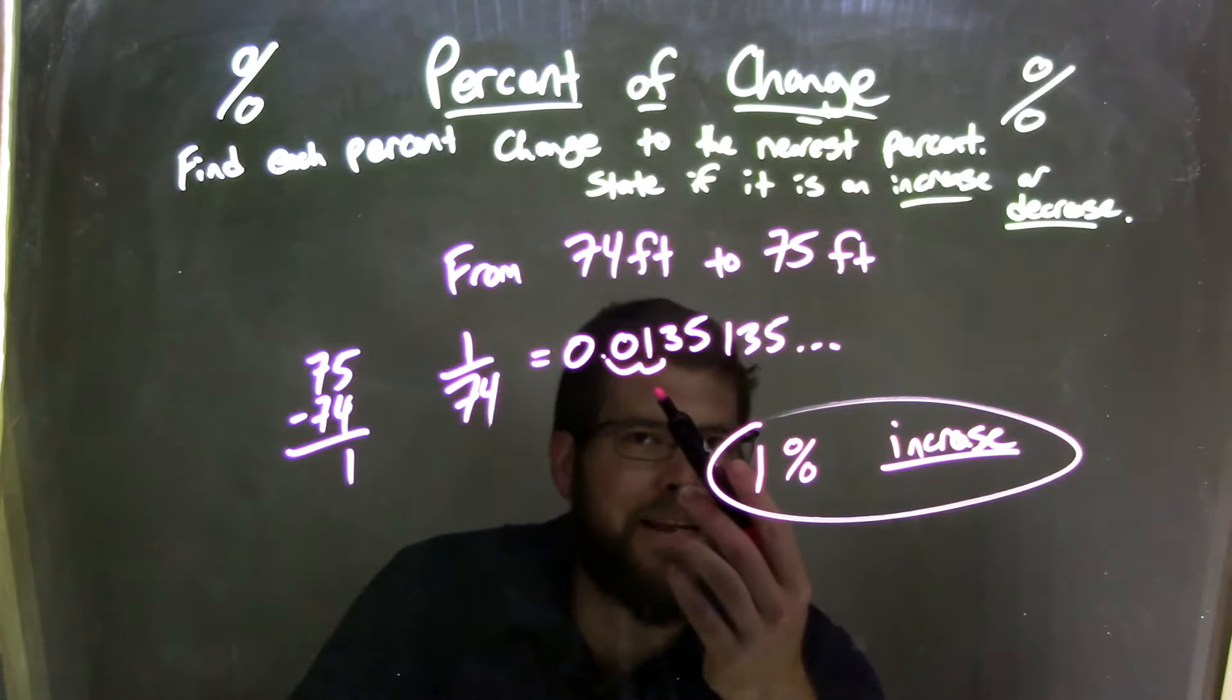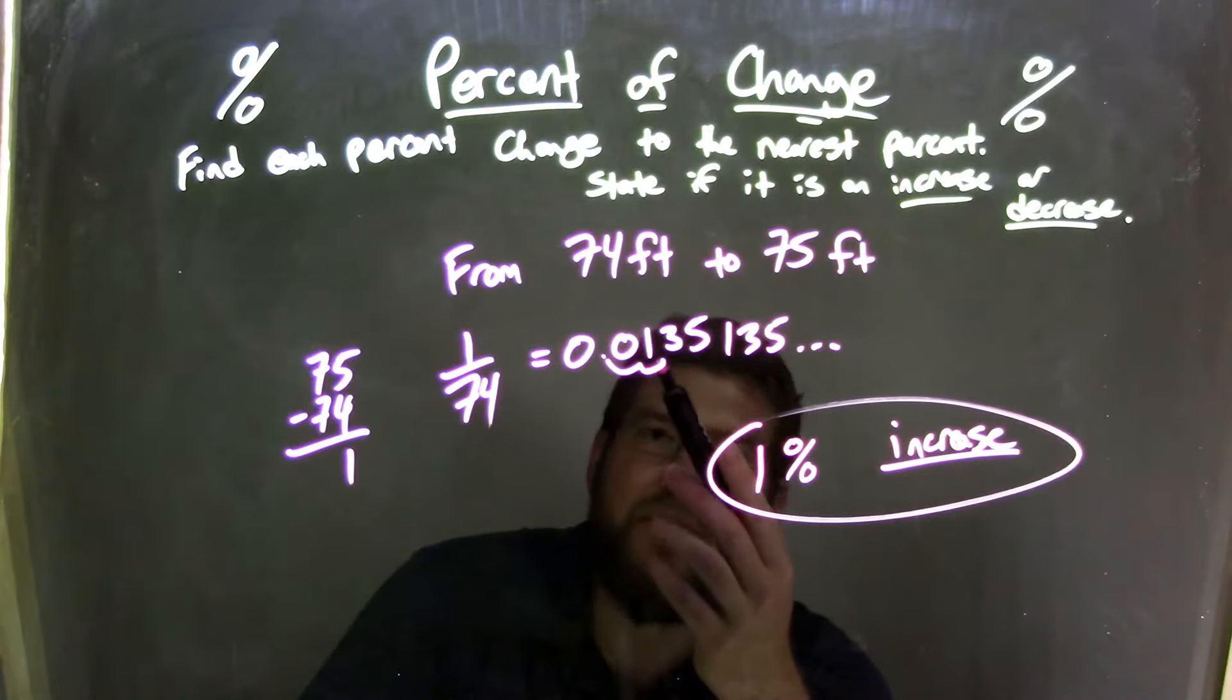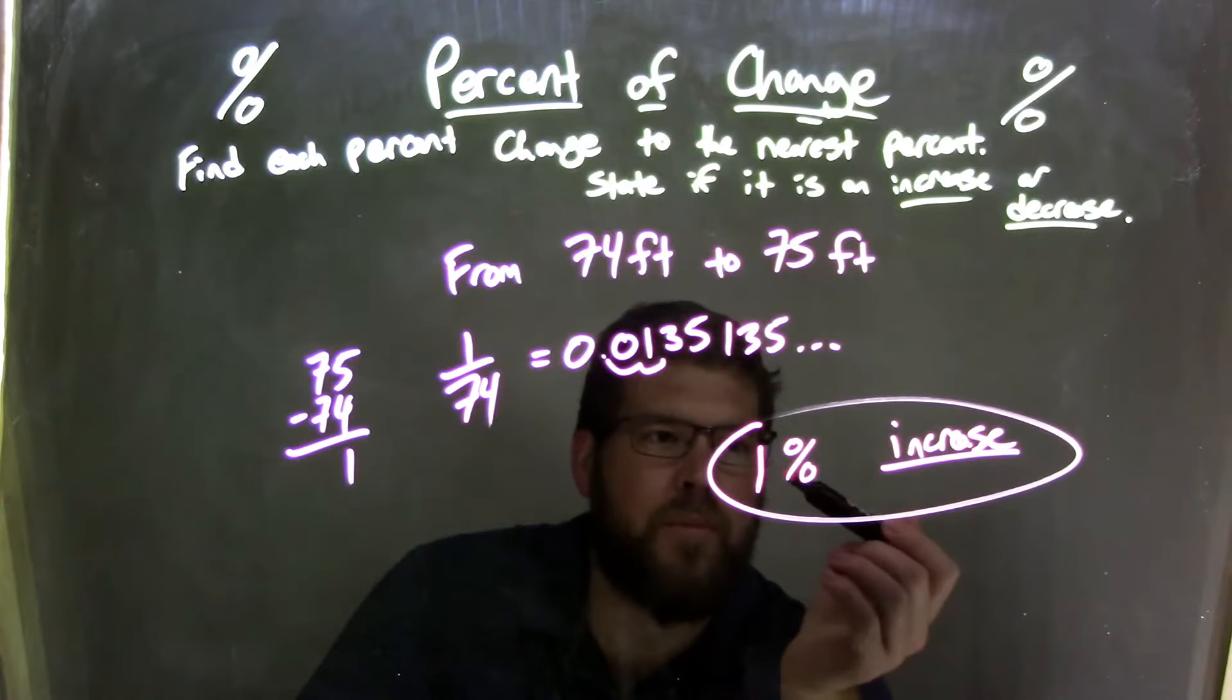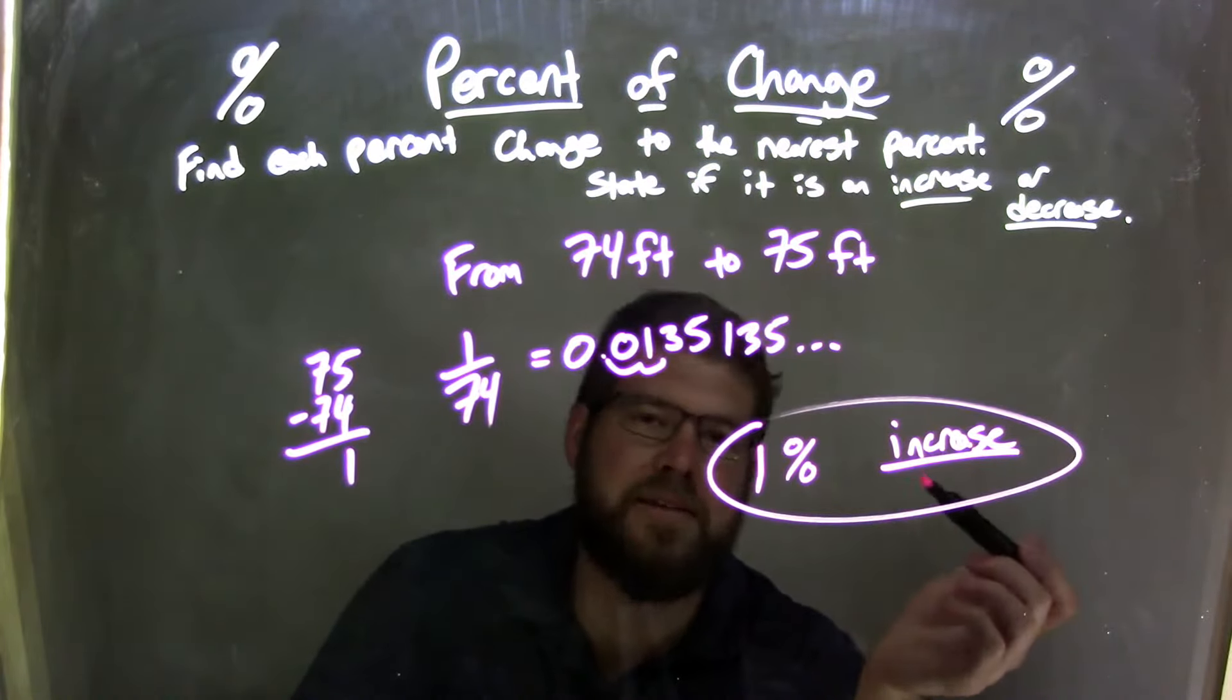We had to round that decimal to see what percent increase it is. We moved it over two units, two positions. We have 1.35. That rounds just to 1%. It's the nearest percent. So our final answer here is 1% increase.